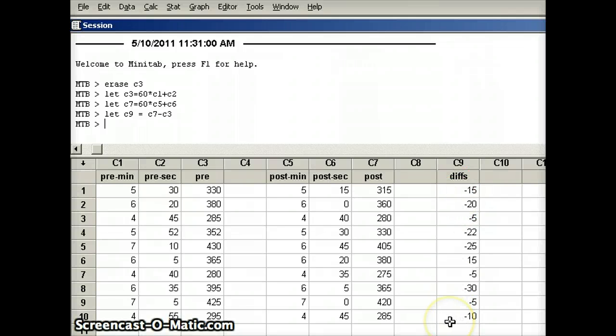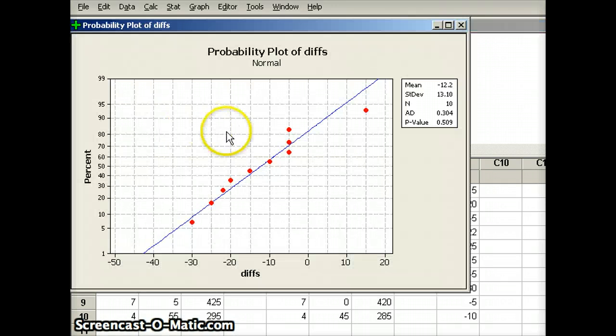Now I need to check to make sure that those differences come from a normal population. So I'm going to say norm test C9. And what's going to come back? Notice we're going to get a mean of negative 12.2, a standard deviation of 13.1, and a p-value of 0.509. If the p-value is small, we reject normality and we reject the t-test. We have to do something else. But the p-value is large, so it is reasonable for us to assume that this set of differences could have come from a normally distributed population.